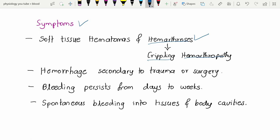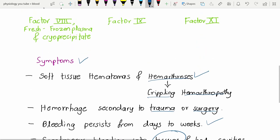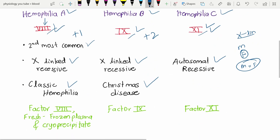Hemorrhage is secondary to trauma or surgery, and bleeding persists from days to weeks. There will be spontaneous bleeding into the tissues and body cavities. Now let's look at the treatment part.